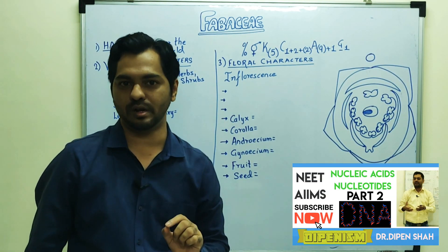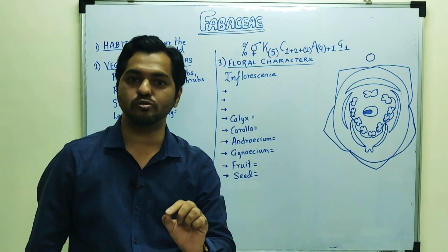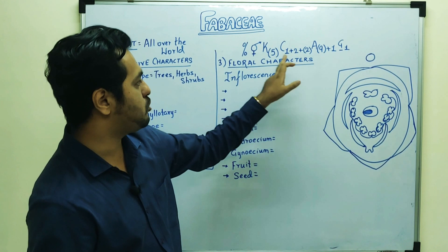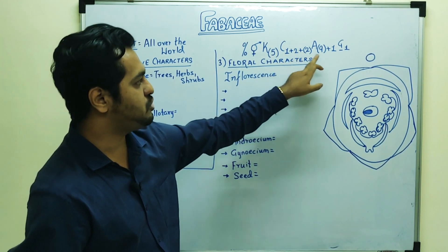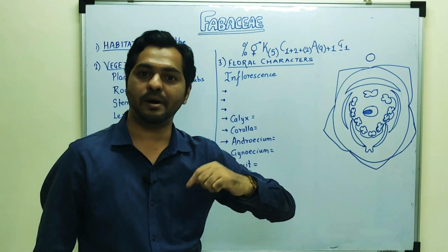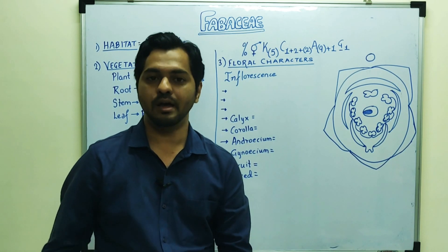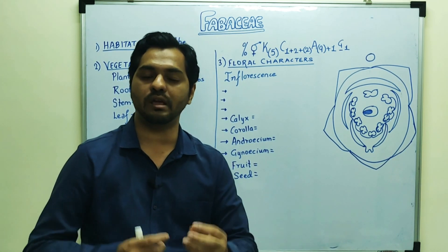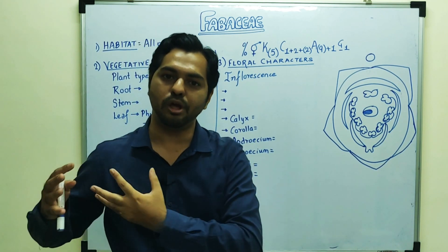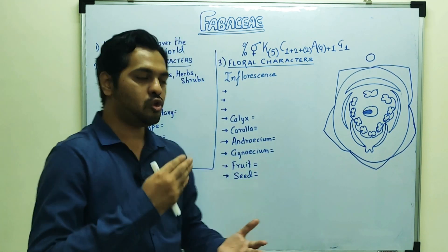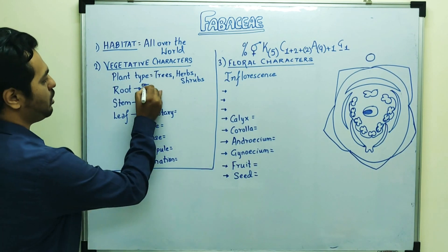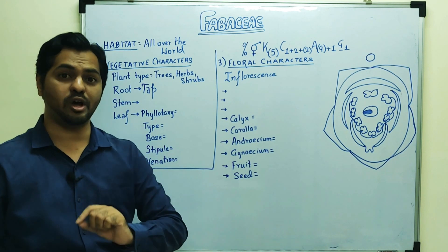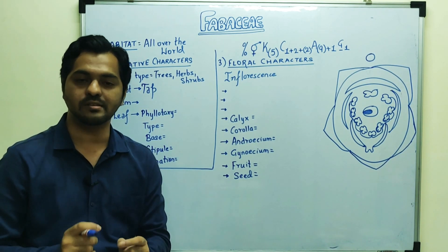This plant is a dicot — if you know that this is a dicot family, then dicot and monocot features have been discussed in morphology. A dicot root has a tap root system, so this family has a tap root system. If it were monocot, it would have been adventitious roots.